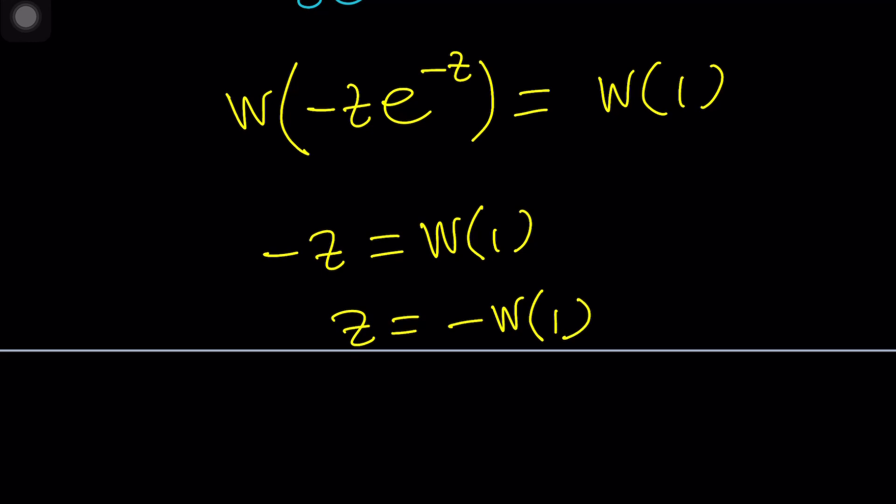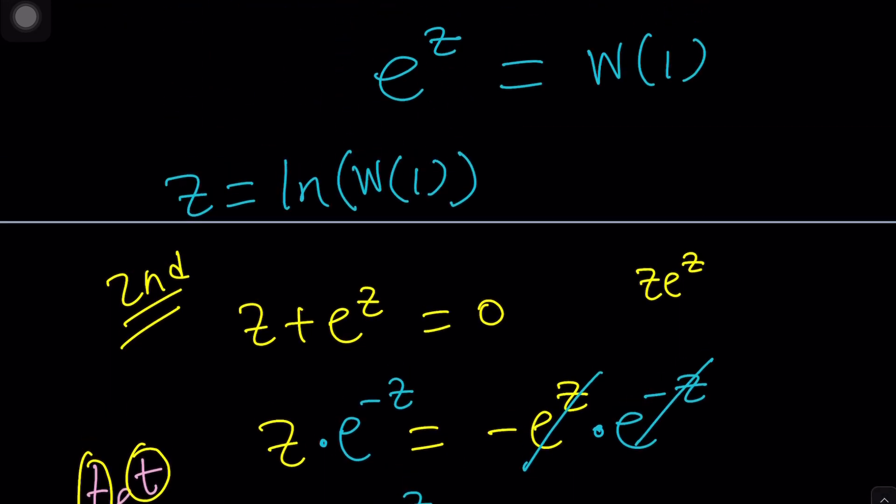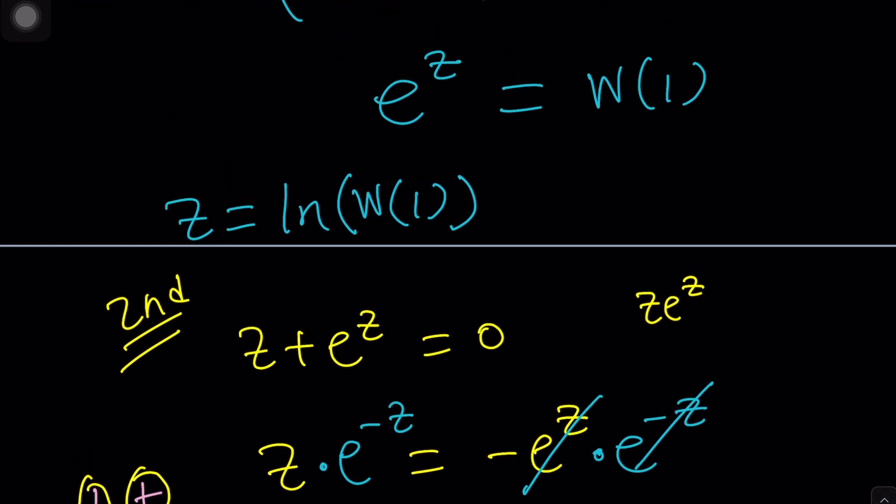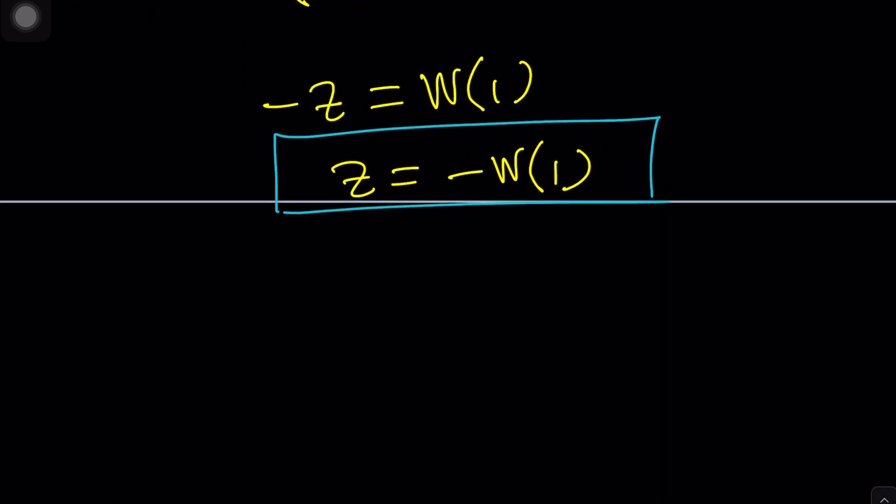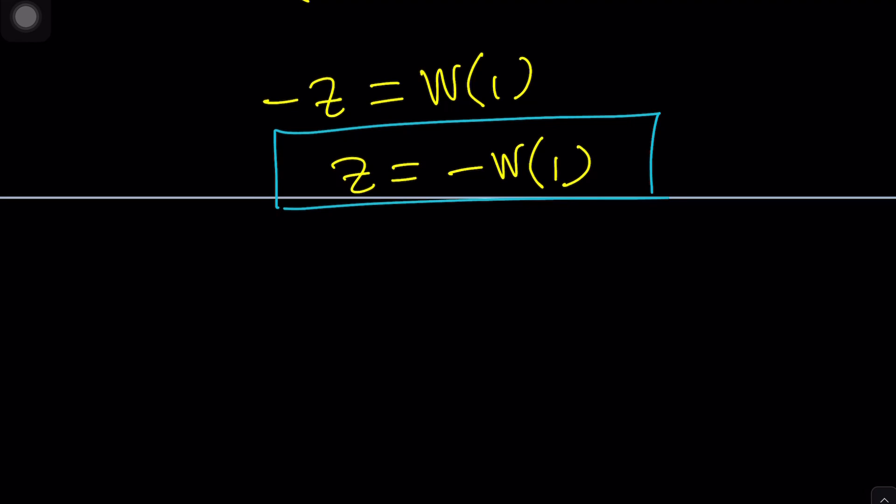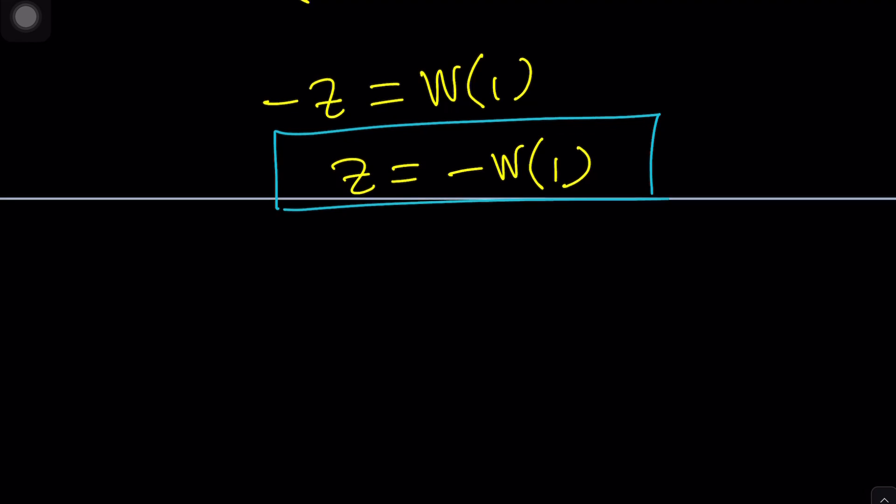Wait a minute. Why did I get two different answers? That's a good question. That's something that I want you to think about. LN W 1. And with one method, we got LN of W 1. And with the other one, we got the opposite of negative W 1. Or are they the same?